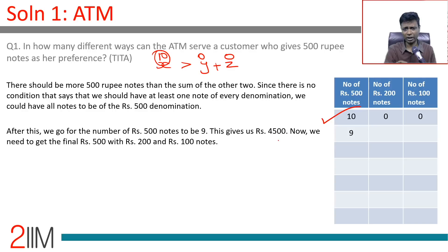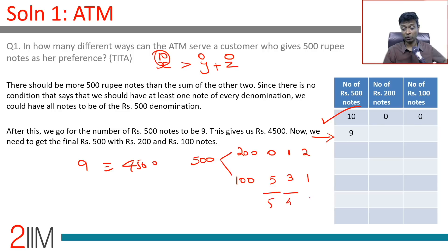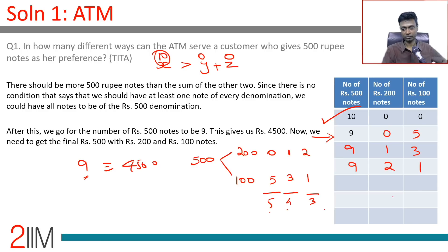With nine 500 rupee notes (₹4500), the remaining ₹500 must come from 200 and 100 rupee notes. Options: zero 200s and five 100s (5 notes); one 200 and three 100s (4 notes); or two 200s and one 100 (3 notes). All totals — 5, 4, or 3 — are less than 9, so all three combinations are valid. That gives 3 possibilities with nine 500 rupee notes.